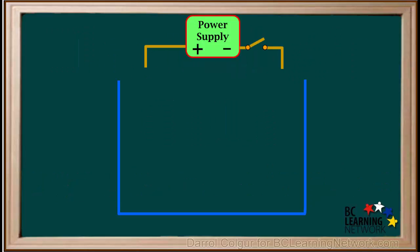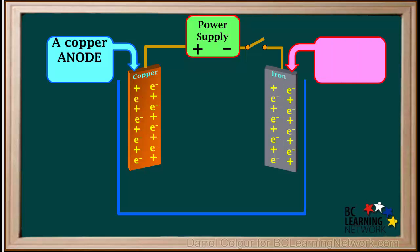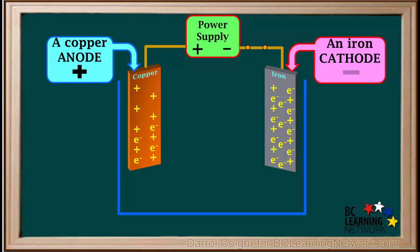We'll start with a power supply, wires, and a container. We'll attach a copper strip to the positive terminal, which becomes a copper anode. And we'll attach an iron strip to the negative terminal of the power supply, which becomes an iron cathode. When the switch is closed, the power supply takes electrons from the copper anode and pumps them onto the iron cathode, so the anode becomes positive and the cathode becomes negative.